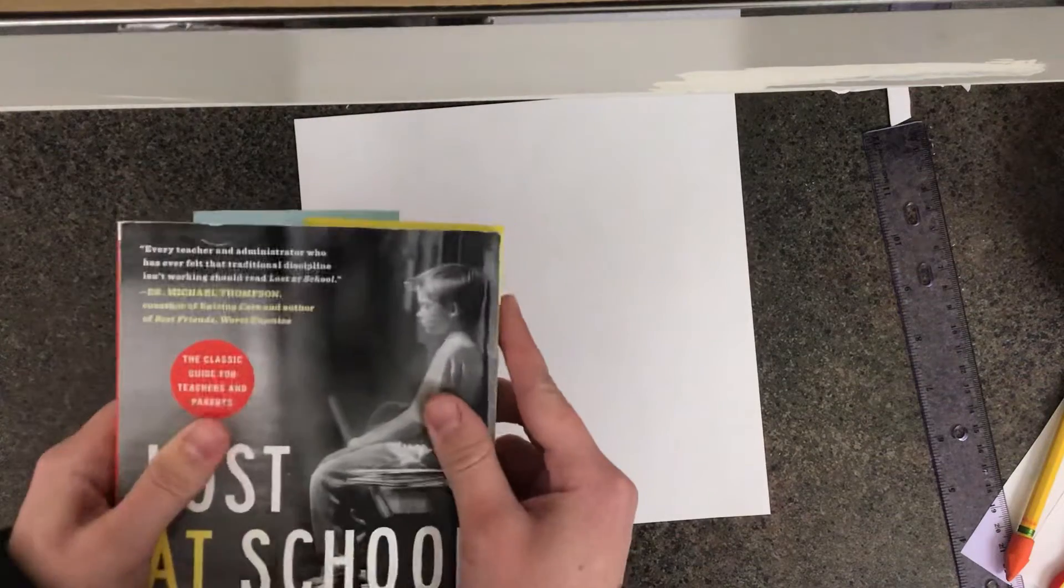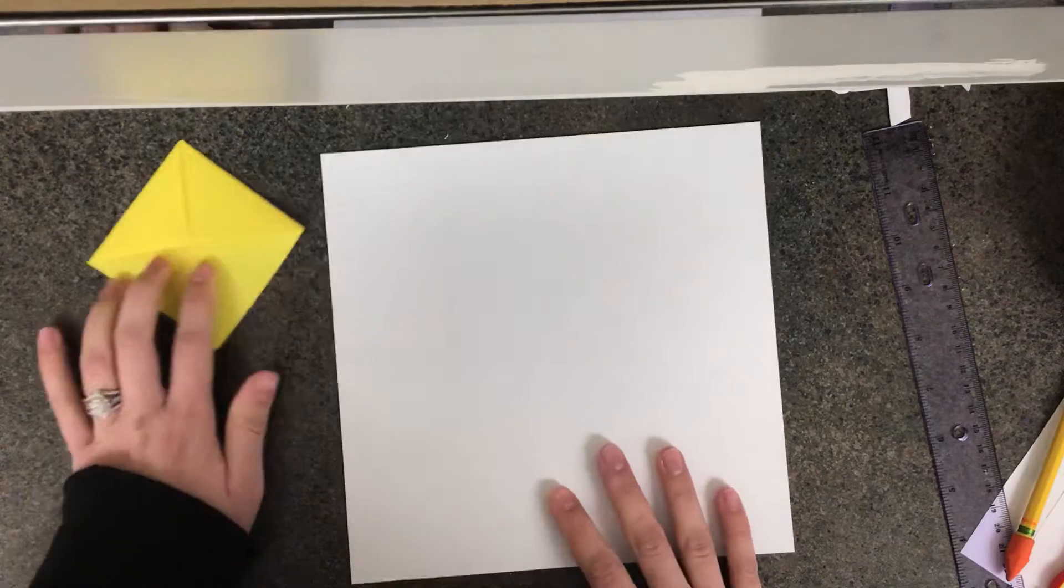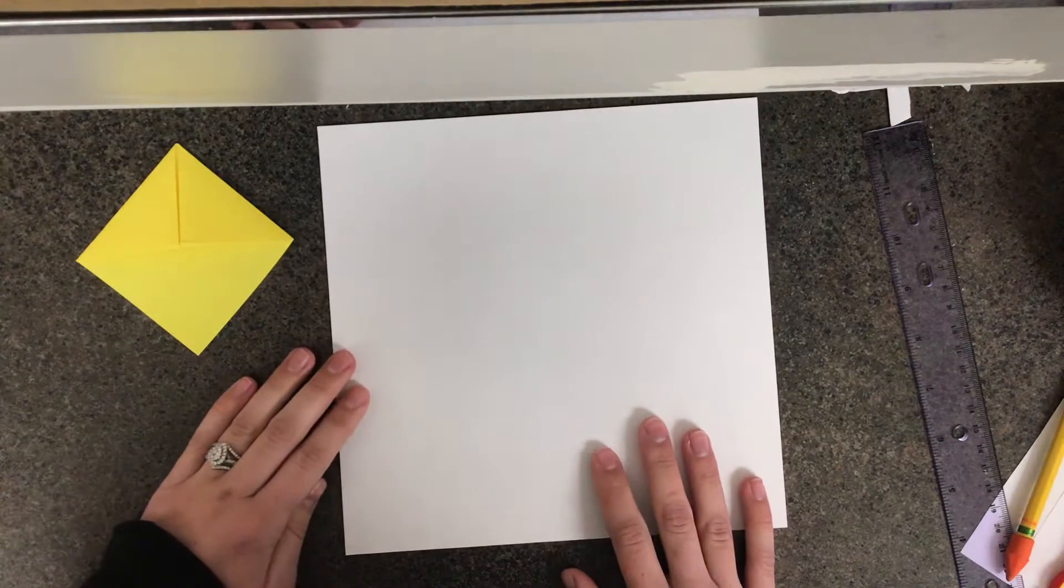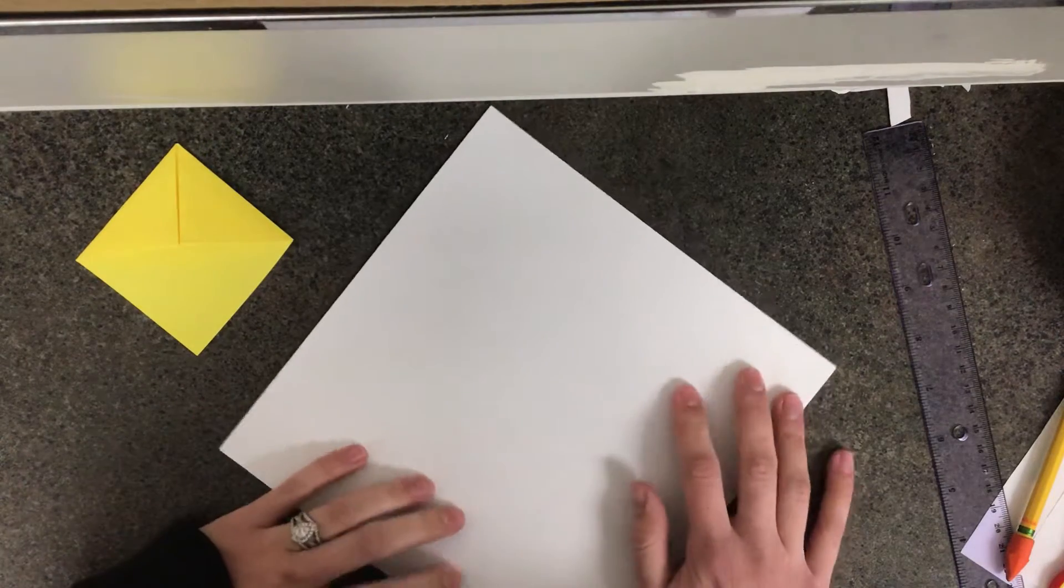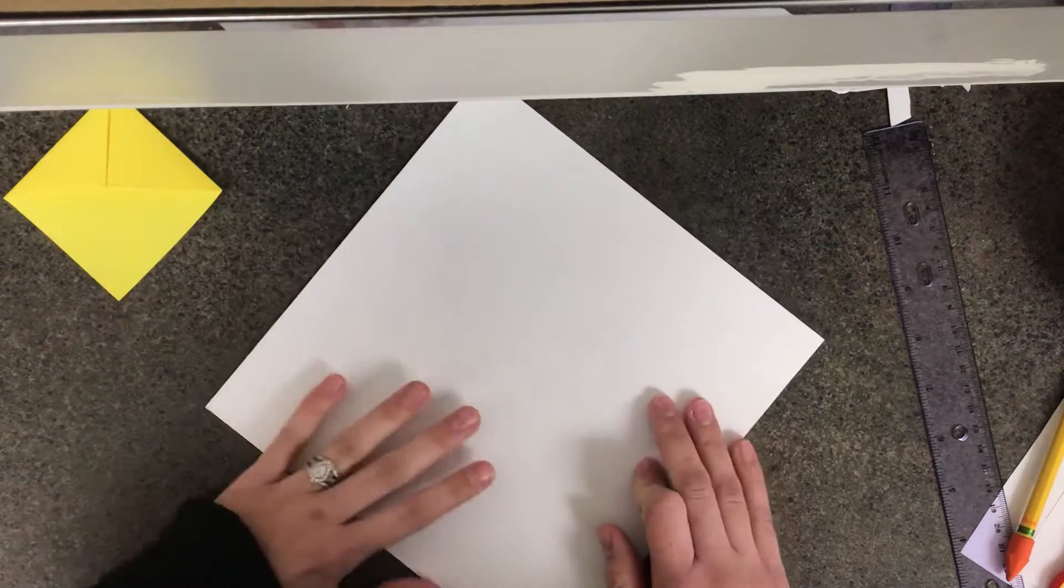Alright, let's get started. You're going to take your square piece of paper. The first thing we're going to do is turn it so that it looks like a diamond instead of a square.